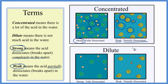So we have two things we need to understand: one, concentrated means there's a lot of it; and two, strong means it's really dissociated. So we can have a dilute acid that's strong — there's not much of it, making it dilute, and it's fully dissociated, making it a strong acid. So we have a strong concentrated acid here and a strong dilute acid here. Here we have a concentrated weak acid, and a dilute weak acid.